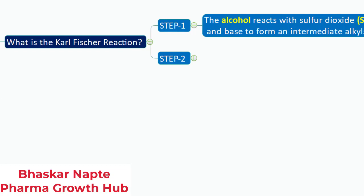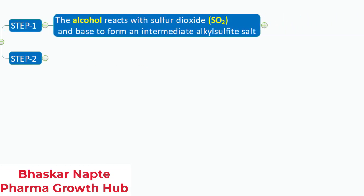In step number one, the alcohol reacts with sulfur dioxide and base to form an intermediate alkyl sulfite salt. Before we discuss steps one and two, let us first understand the constituents or composition of the KF reagent. The KF reagent consists of alcohol, it can be methanol, a base like pyridine or imidazole, sulfur dioxide, and iodine. So we understand the four different components of the KF reagent.